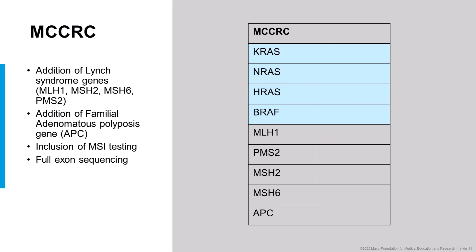This is our colorectal cancer panel. You can see the previous panel again in blue — four genes. We have added five additional genes: the four DNA mismatch repair genes MLH1, PMS2, MSH2, and MSH6, and also the familial adenomatous polyposis gene, APC. For each and every one of these, we're sequencing the entire exons and we're including MSI testing.